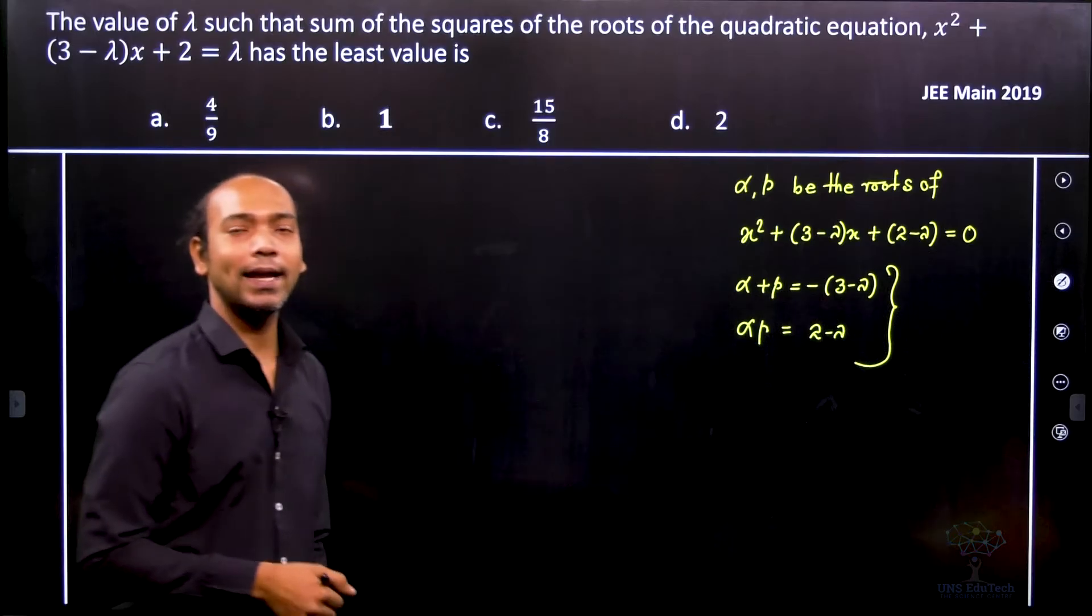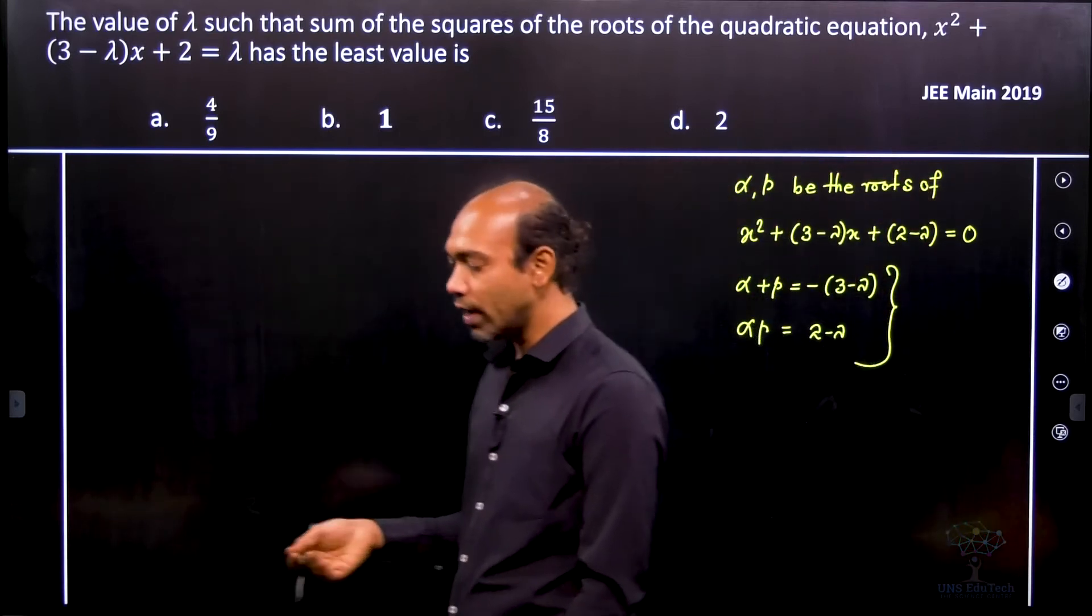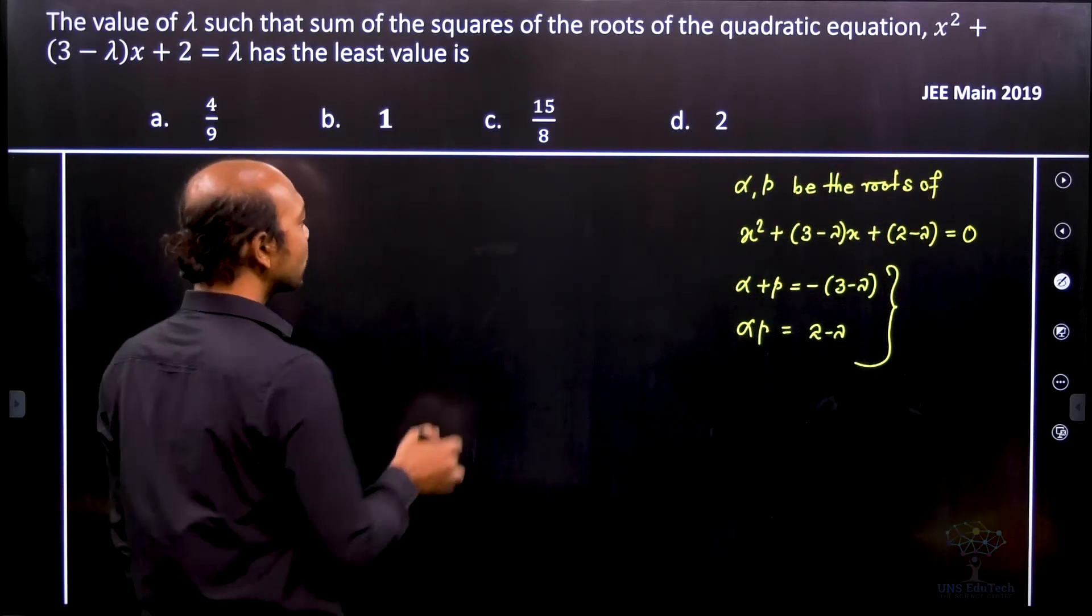Now let's go ahead and see what is the value of the square. So that means alpha squared plus beta squared. Let's go ahead.